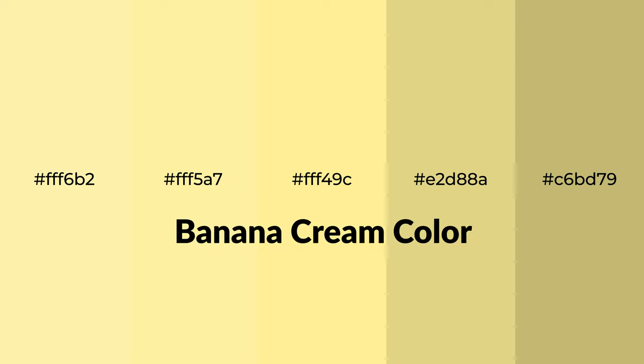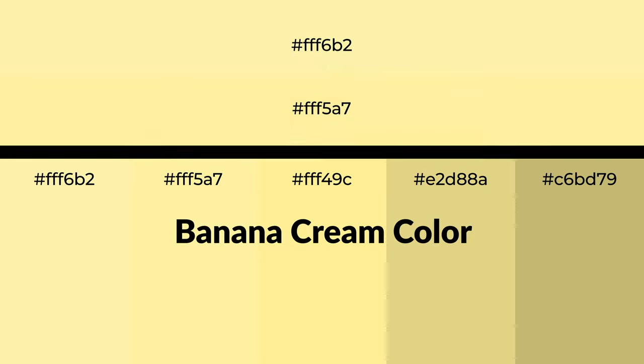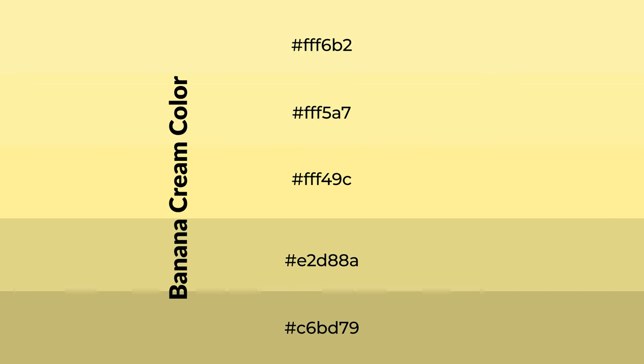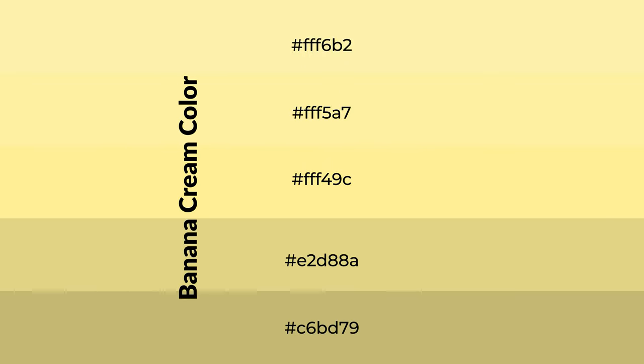Warm shades of banana cream color with yellow hue for your next project. To generate tints of a color, we add white to the color. Tints create light and exquisite emotions. To generate shades of a color, we add black to the color, and it is used in patterns, 3D effects, and layers. Shades create depth and drama.